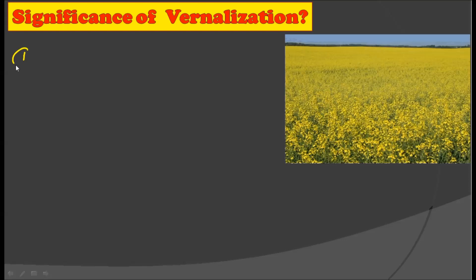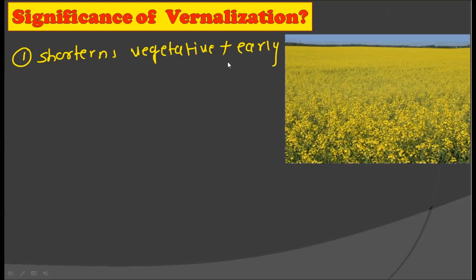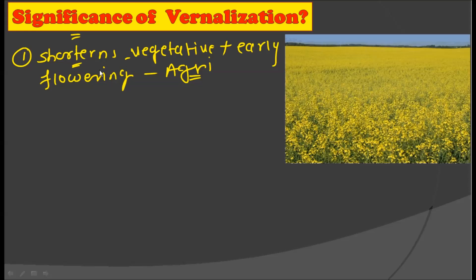What is the significance of vernalization? The first significance is that it shortens the vegetative period and induces early flowering. This has a great advantage in agriculture, because in agricultural crops we want early flowering so that fruiting takes place and harvesting can occur as soon as possible.